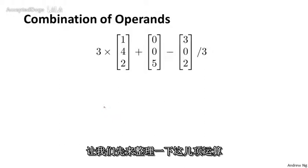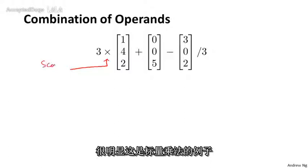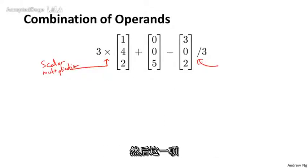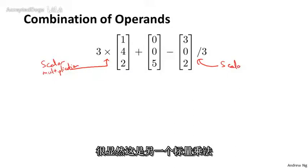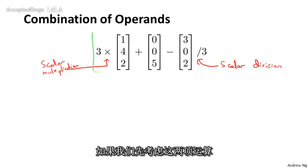Just to make sure we know what these are, this multiplication is an example of a scalar multiplication because I'm taking 3 and multiplying it. And this is another scalar multiplication. I'm going to write scalar division, I guess. This really just means 1 third times this.